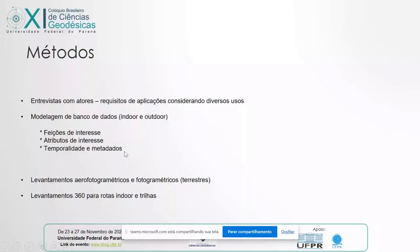Os levantamentos aerofotogramétricos e fotogramétricos já estão em execução, e a gente está fazendo também um projeto para começar o levantamento 360 — essas fotos imersivas, como o Street View — para fazer rotas indoor e trilhas. Foi muito legal a apresentação de hoje para a gente considerar bastante a questão da acessibilidade dentro dessas imagens e simbologias cartográficas que a gente planeja inserir dentro desses produtos.